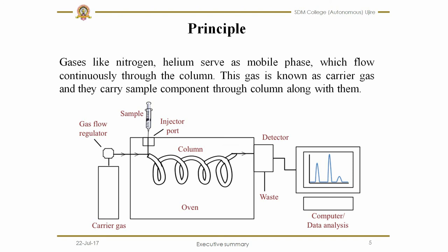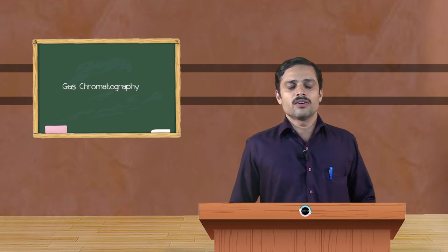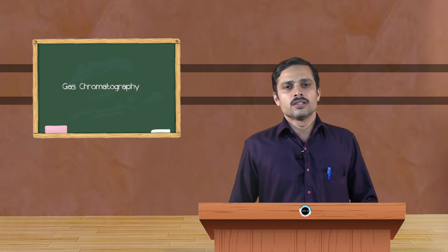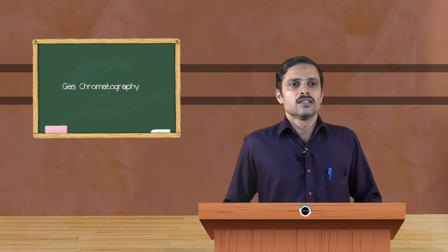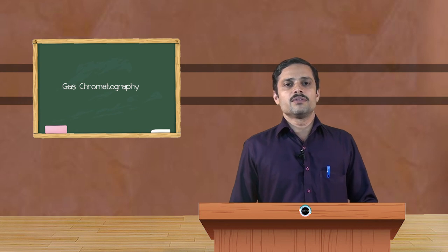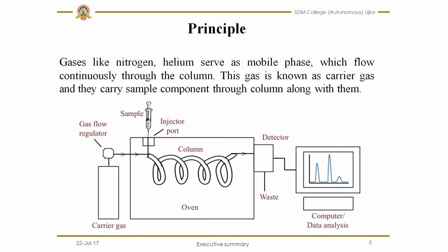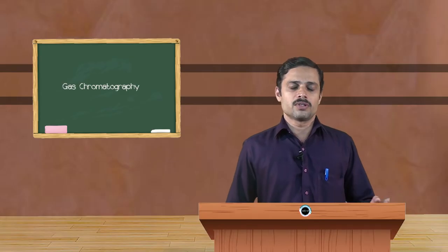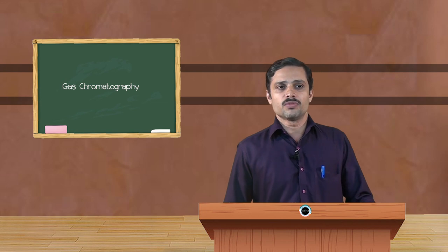Then the carrier gas is first flown into the column. Along with that, some oxygen will be supplied. It acts as oxidant and at the temperature sample will be injected. As soon as the sample is injected in the injector port, the whole sample, if it is liquid, gets vaporized. If it is gas, there is no question of vaporizing because it is already in the form of vapor.